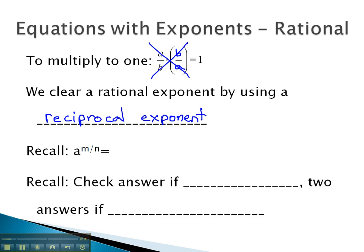As we use the reciprocal exponent, it will be important to remember that a rational exponent really just means a radical, where the denominator is the index. The numerator remains as the exponent on everything.